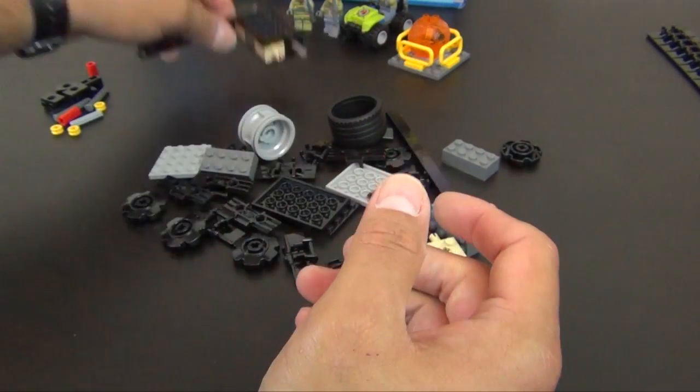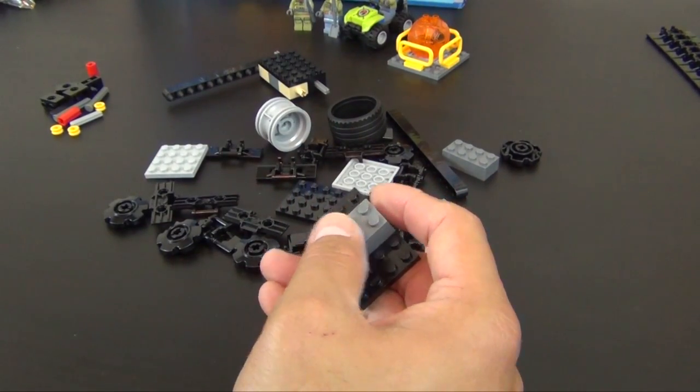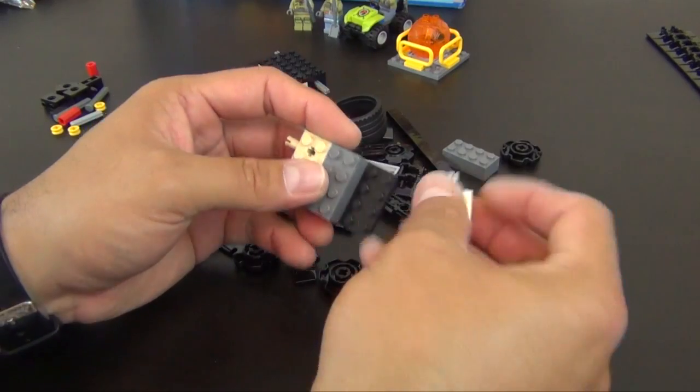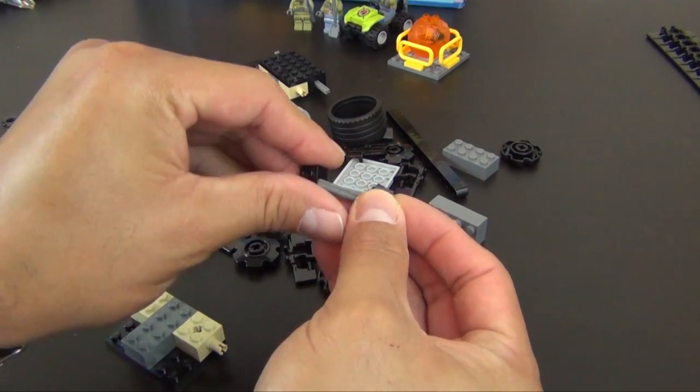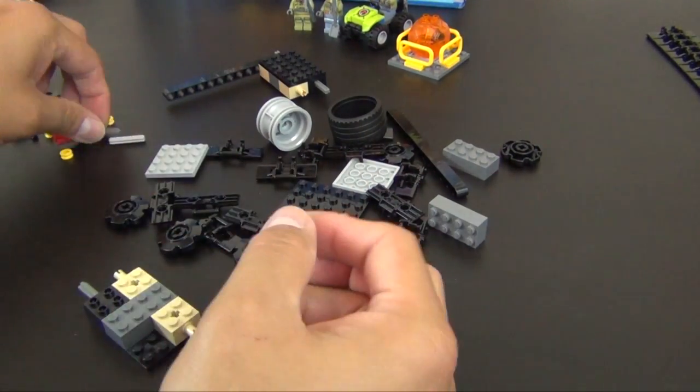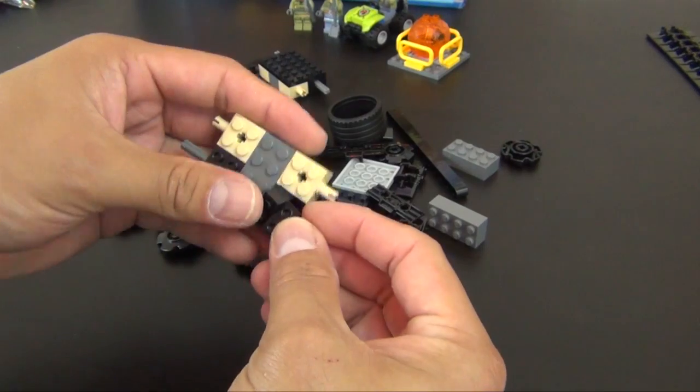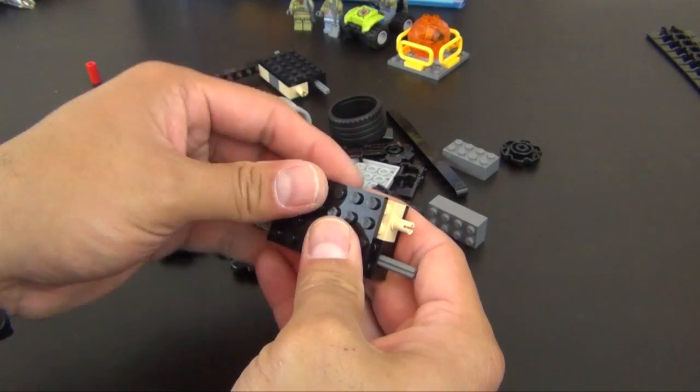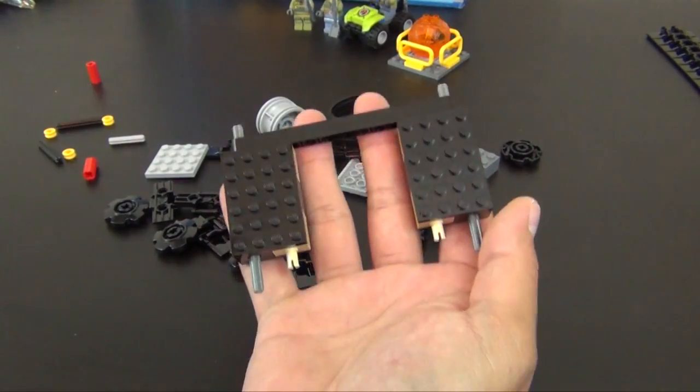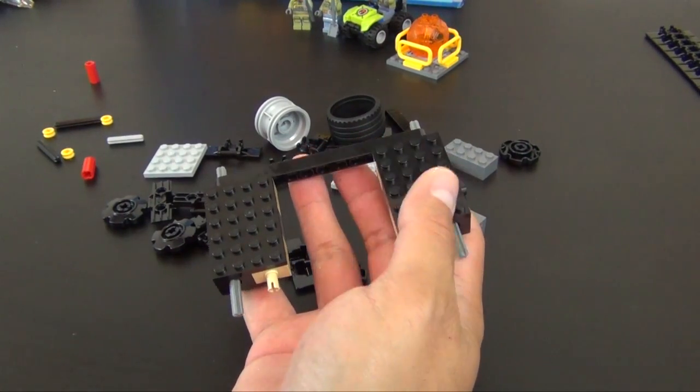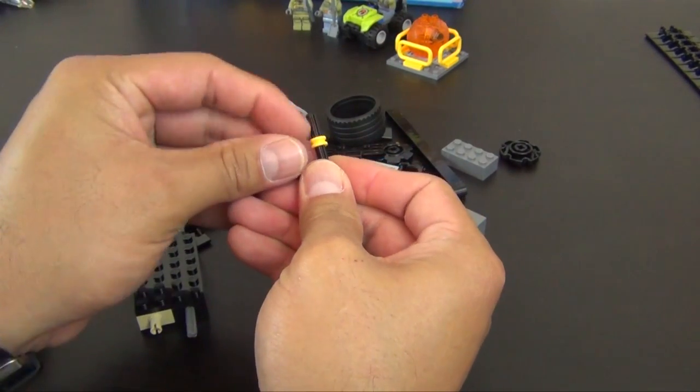Build another section of the chassis. Same deal - we have the axle with a stop, another axle with a stop, another plate. That goes there. Now we're going to make a slightly different axle.